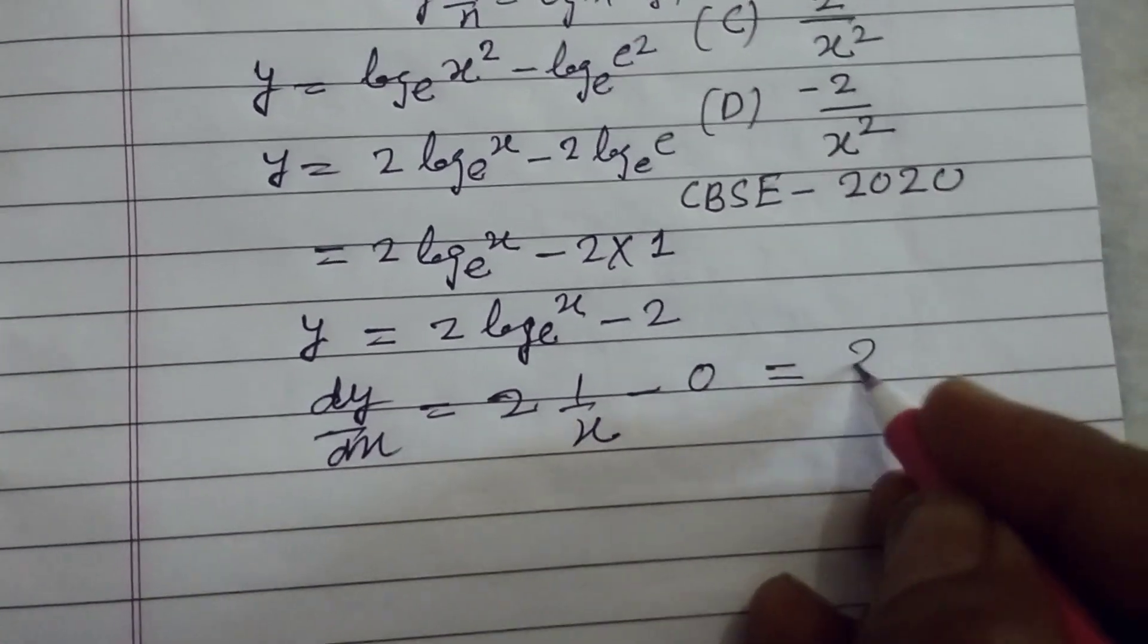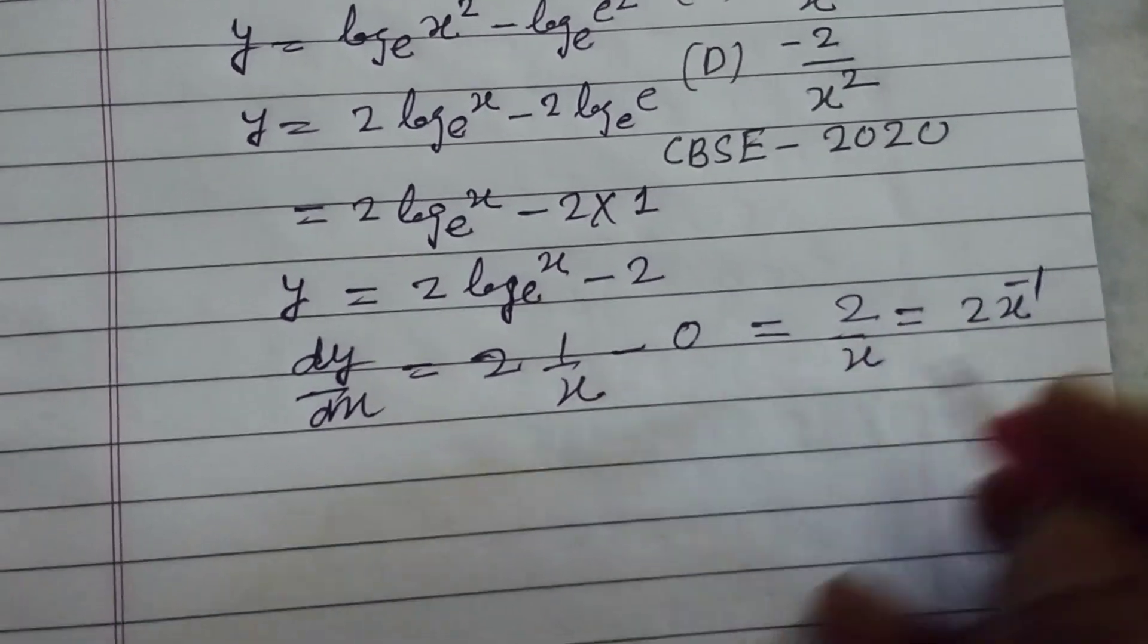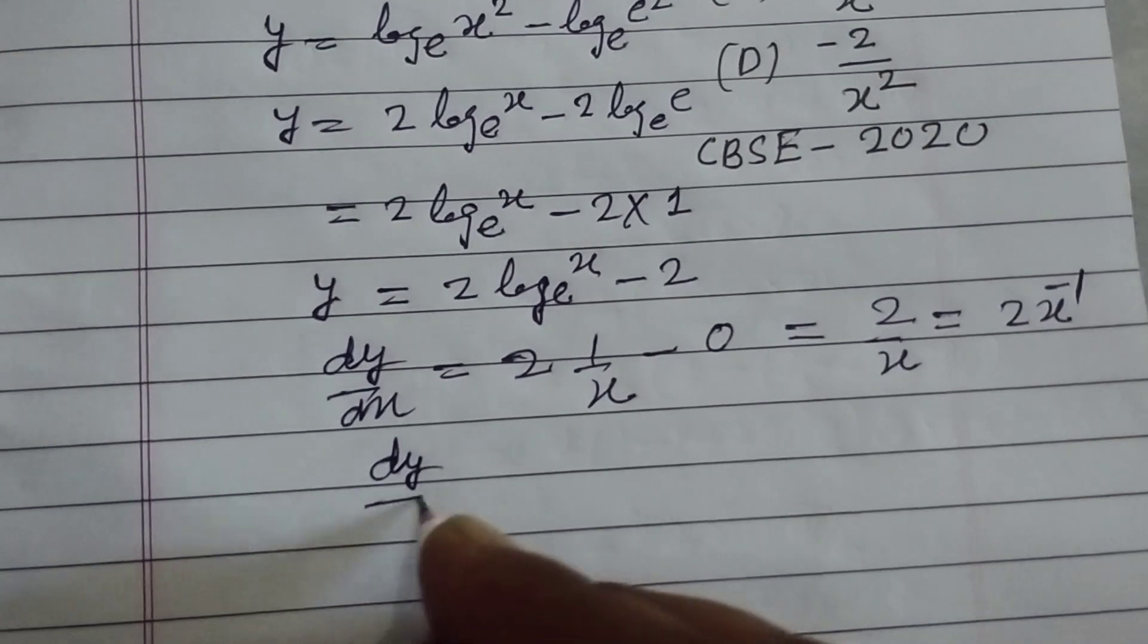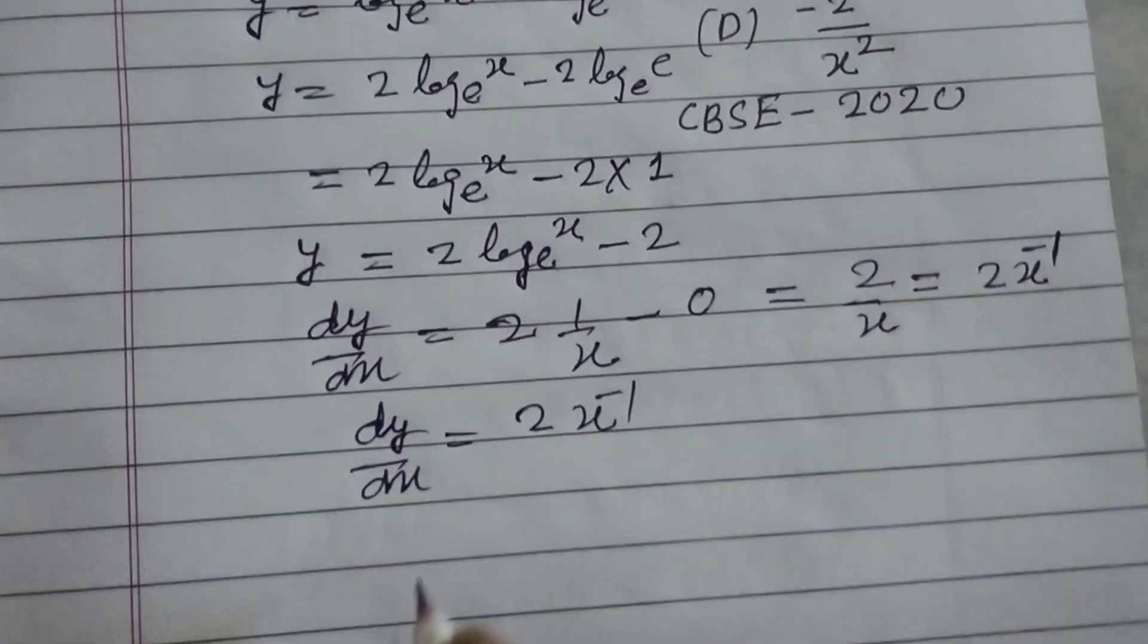So we got 2 upon x, and we write it as 2 into x to the power minus 1. So dy by dx equals 2x to the power minus 1.